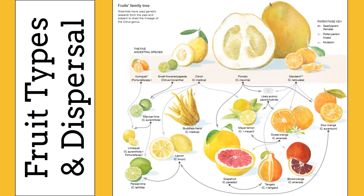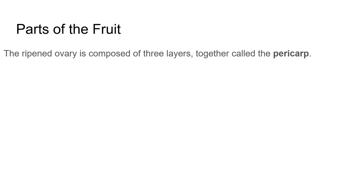This infographic shows the evolutionary history of citrus and how humans have interacted with citrus and done selective breeding to produce many of the different types of citrus that we have now. First, we'll look at parts of the fruit. The ripened ovary is composed of three layers; together these layers are called the pericarp, and we're going to use these layers to identify fruit types.